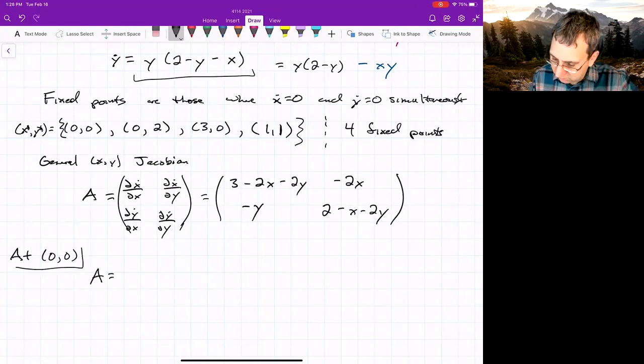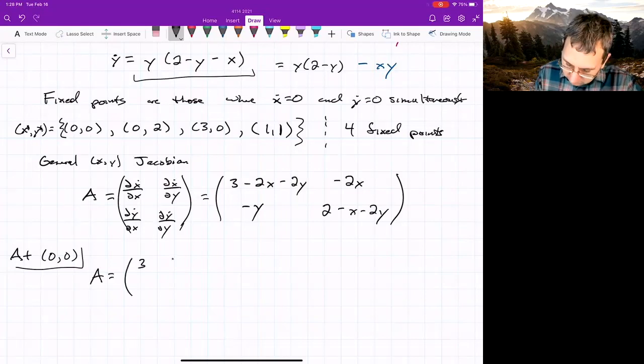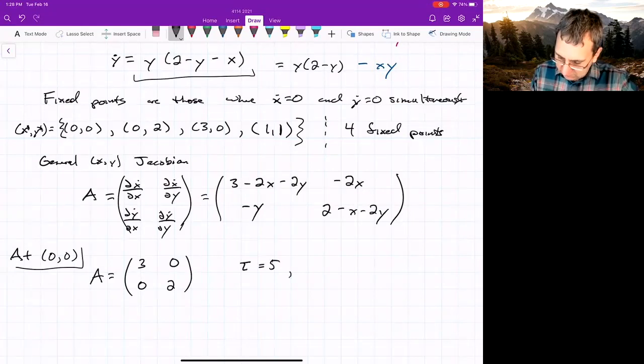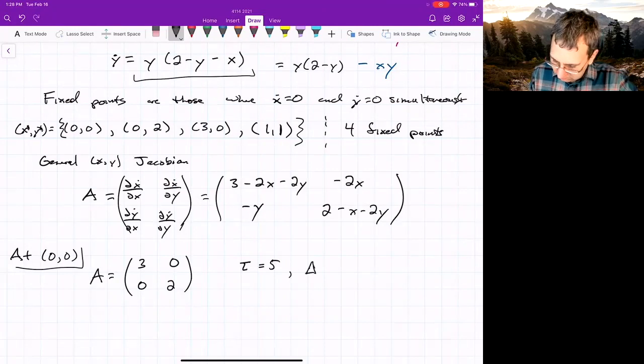So now let's look at each of these fixed points. Just plug in (0,0), and you get 3 here, 0, 0, 2. So nothing off the diagonal. We can look at what tau is. Tau is 5. And what is delta? Delta is 6.